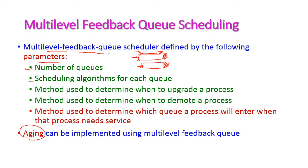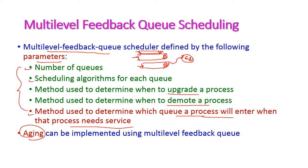The third parameter is the method used to determine when to upgrade a process and when to demote a process. The fourth parameter is the method used to determine which queue a process will enter when it needs service — that is, when the process will get CPU service and how it will be selected by the multi-level feedback scheduler. These are the important parameters to consider while designing multi-level feedback queue scheduling.